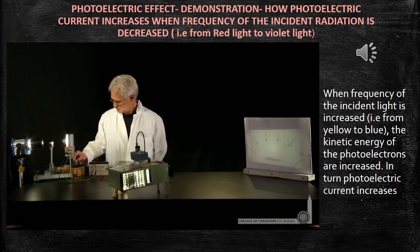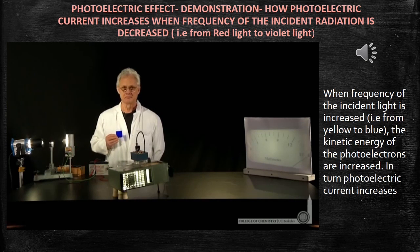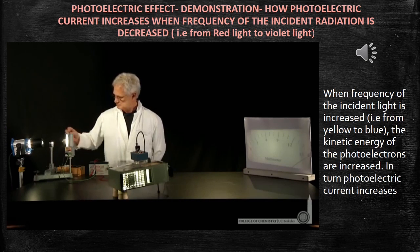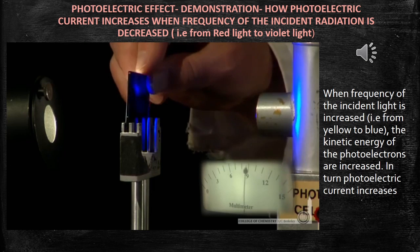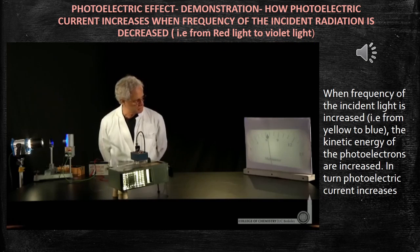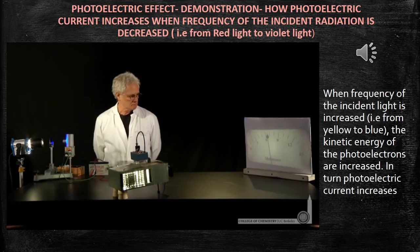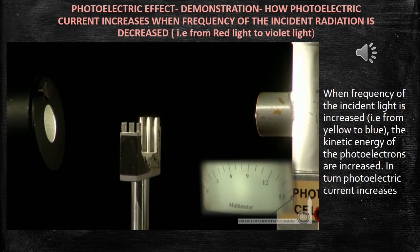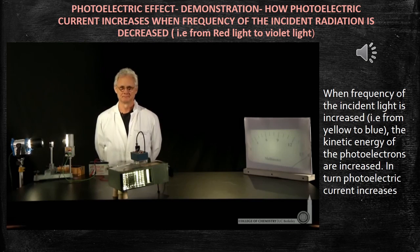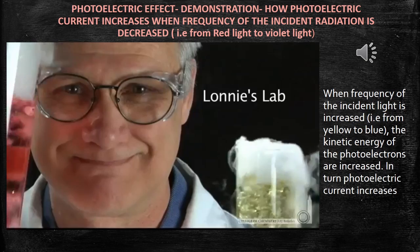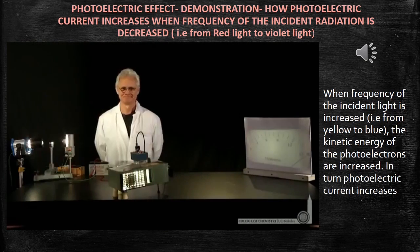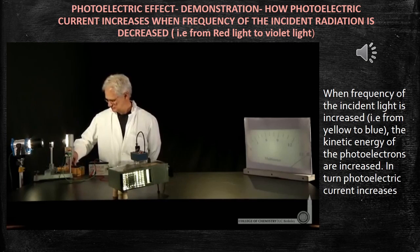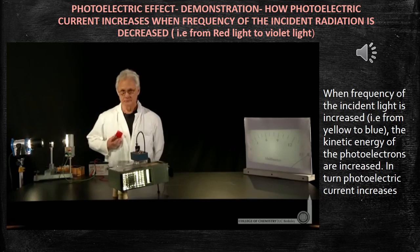After that, the red filter is removed and the yellow filter is placed. The yellow photons have more energy than the red photons. The red photons don't have sufficient energy, but yellow photons have a little bit greater energy than the red photons. Yellow photons are capable of removing the electron from the metal surface. Therefore, photoelectric current is slightly increased, which is also shown in the multimeter.